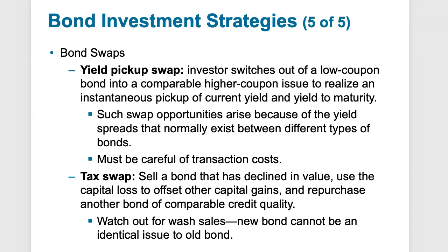Bond swaps occur when an investor sells one bond and simultaneously buys another to take its place — trying to increase current yield or yield to maturity by finding a replacement bond at a higher yield, hopefully improving overall portfolio quality. The yield pickup swap swaps a low-coupon bond for a comparable higher-coupon issue, realizing an instant pickup in yield and yield to maturity. The tax swap involves selling a bond that's declined in value using the capital loss to offset capital gains from other bonds. Be careful of wash sales — new bonds cannot replace bonds that you've sold for the same issue until you've waited 30 days, just like the wash sale rule for stocks.